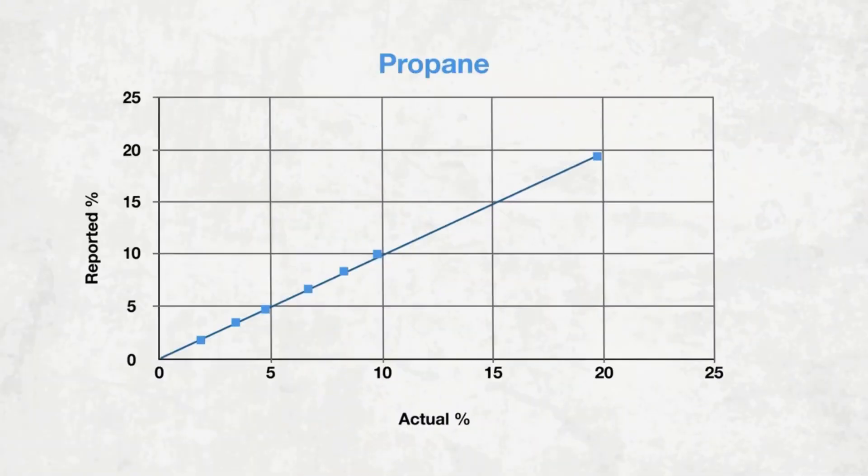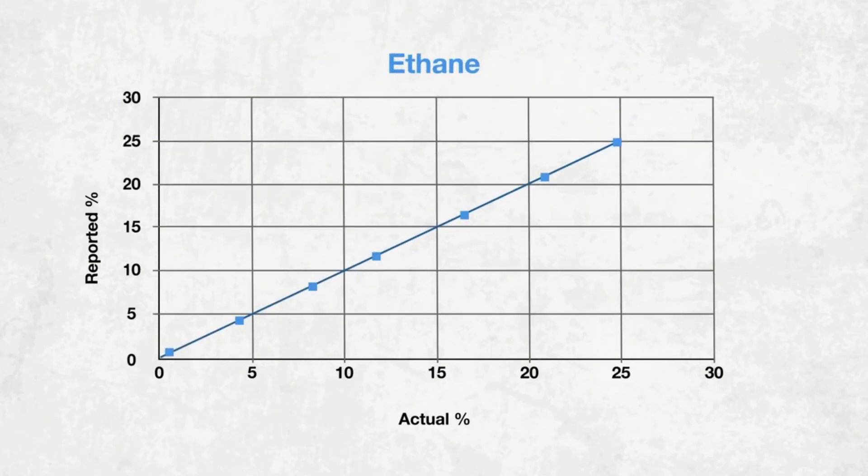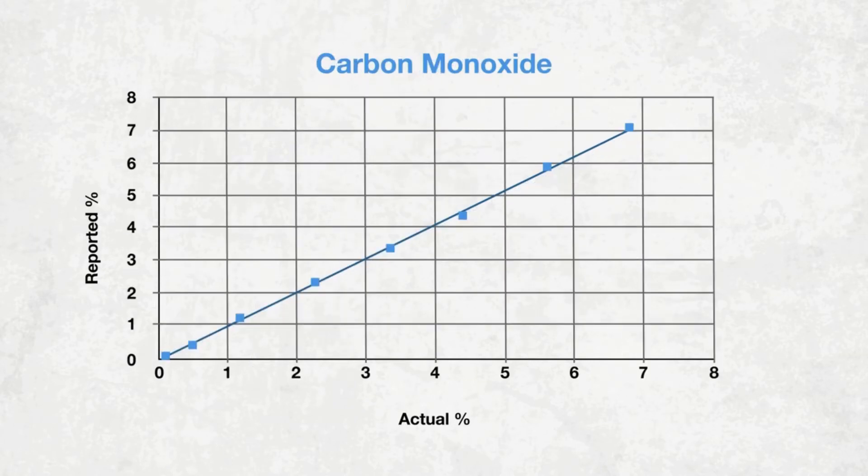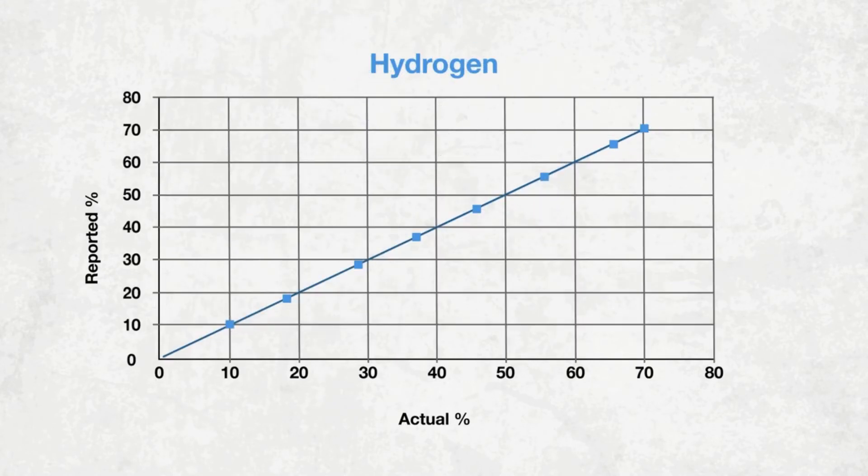Proven to have linearity superior to gas chromatography, the PrimaPro scanning magnetic sector is the only process MS to be independently verified by the internationally renowned and accredited laboratory EffecTech.